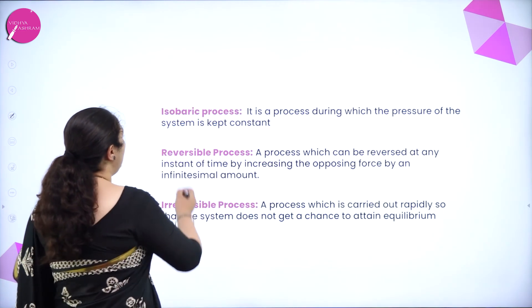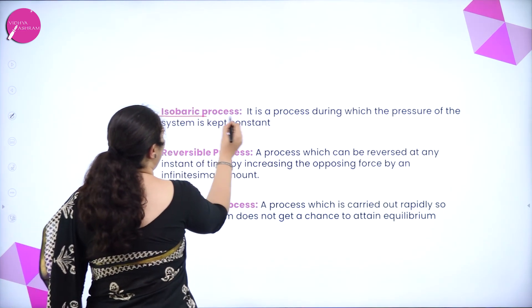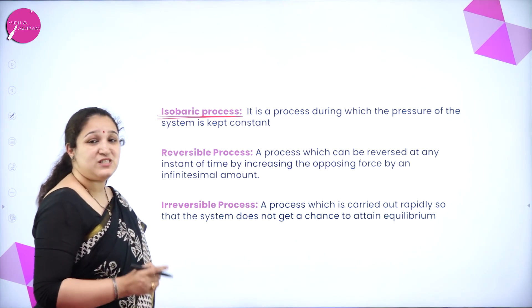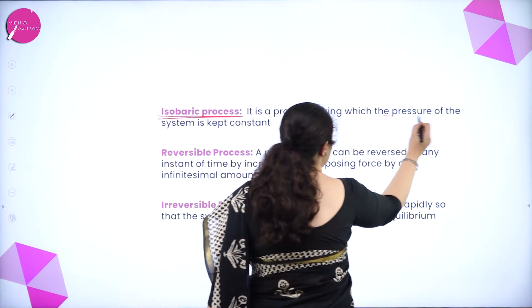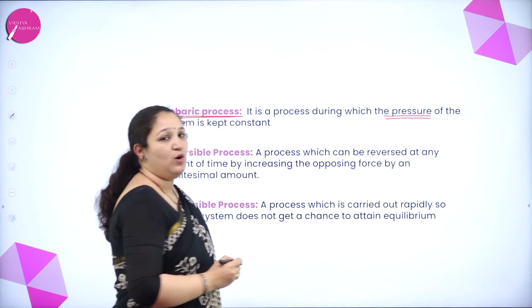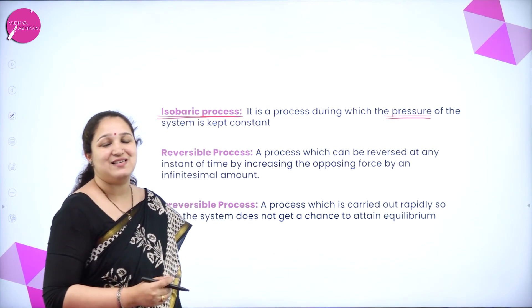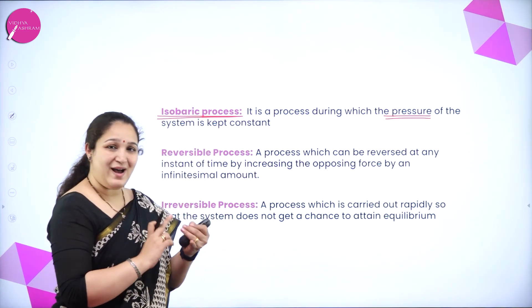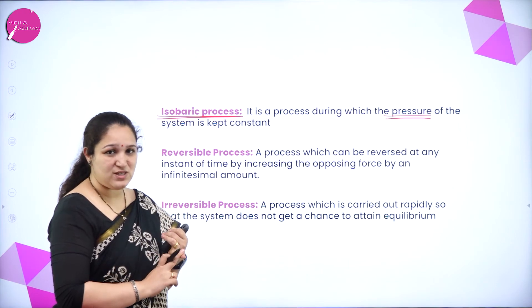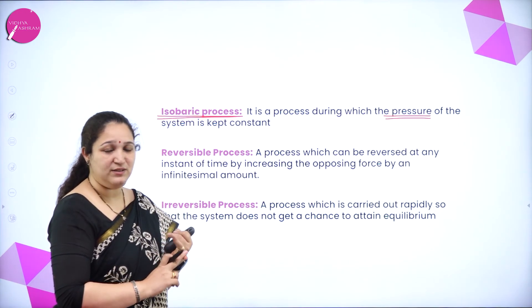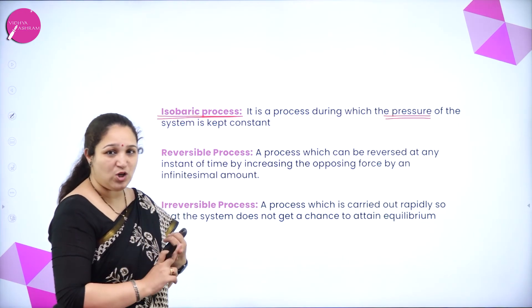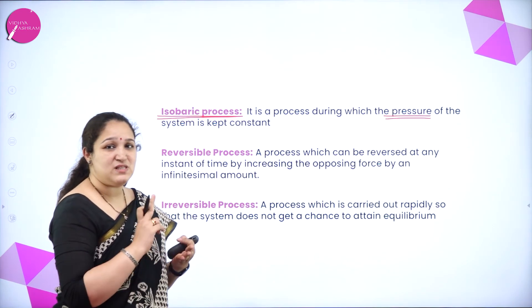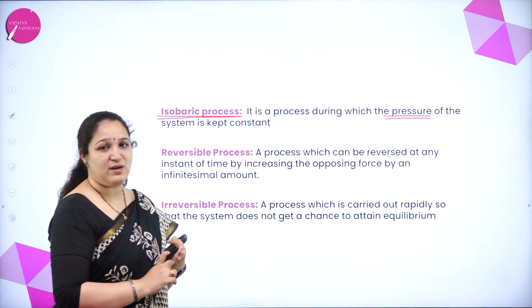Next is the isobaric process — the process in which the pressure is kept constant. We call it as the isobaric process. So, isothermal means temperature is kept constant, isochoric means volume is kept constant, and isobaric means pressure is kept constant.